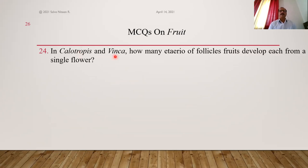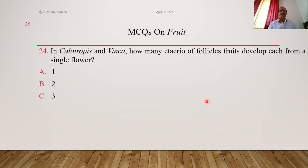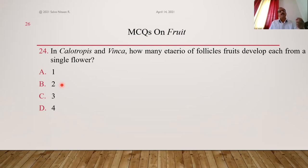In Calotropis — rui/ruti in Marathi — and Vinca (Catharanthus roseus — sadhafuli in Marathi), how many etaerio of follicles develop from a single flower? These are aggregate fruits — etaerio of follicles. In Calotropis and Vinca, the flower has bicarpellary apocarpous gynoecium — two free carpels, so two ovaries in each flower. Each ovary forms one fruit, so a pair of follicles forms per flower. Answer is B, two.